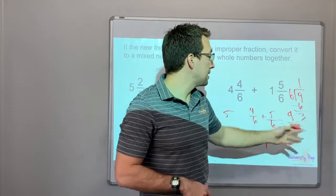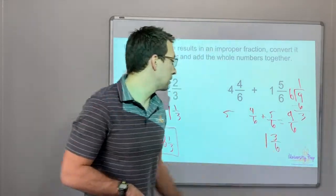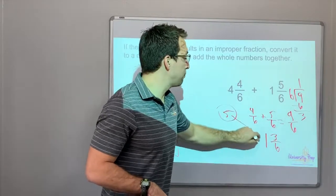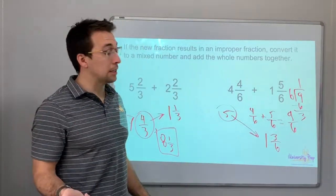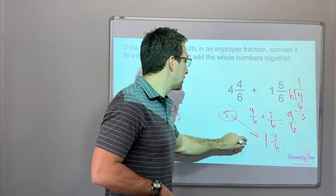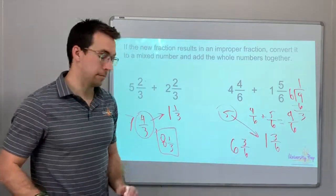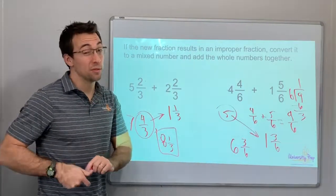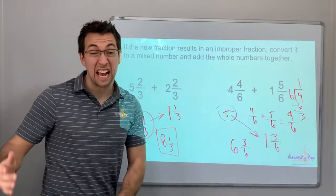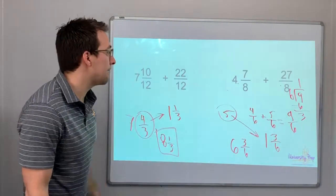9 minus 6 is 3, so then we have 3/6. What's 5 plus 1 and 3/6? That would be 6 and 3/6. And if we wanted to, we could simplify. 3 is half of 6, so 6 and 1/2.